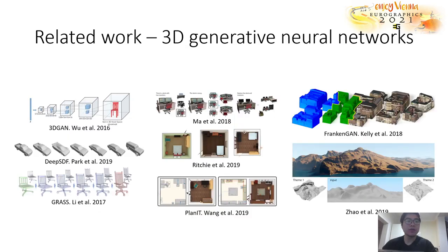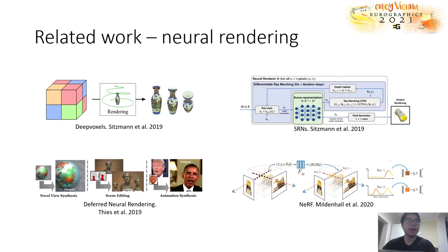Researchers have also developed various 3D generative models for automatic content creation, ranging from single object, indoor scene, urban landscape, and terrain generation. But the generated geometry is still insufficient to be directly rendered into high quality images. A very exciting breakthrough is neural rendering, where deep features are learned on coarse geometry and then rendered to produce the final images. But most of these approaches use supervised training and target novel view synthesis tasks.